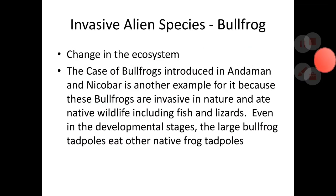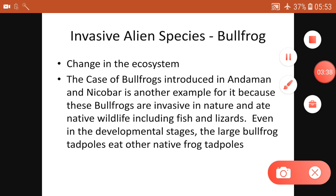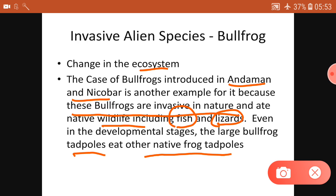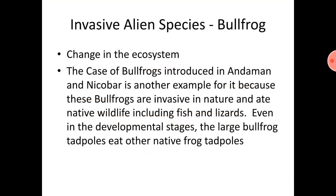With the bullfrog, the entire ecosystem gets changed. It has come to Andaman and Nicobar, where it has become invasive in nature. Native wildlife including fish and lizards are getting extinct. Even in the developmental stages, large bullfrog tadpoles eat other native frog tadpoles, affecting other tadpoles and frogs in Andaman and Nicobar. This is an example of how invasive species disturb the entire ecosystem.